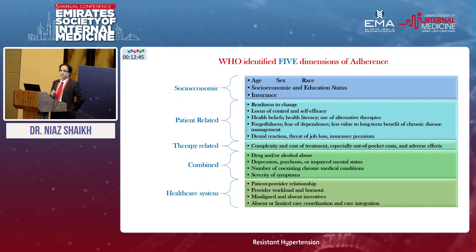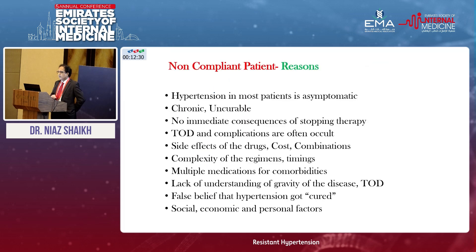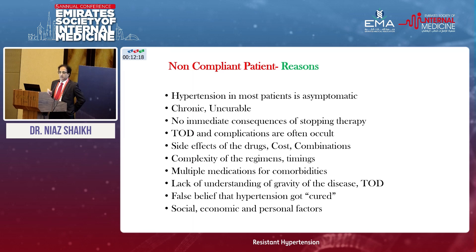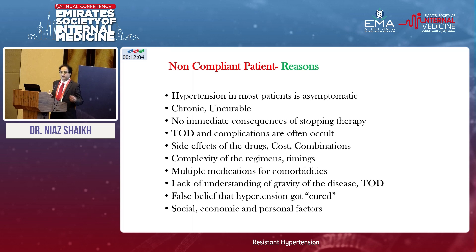Coming back to the patient perspective — why do patients have a problem with adherence? Patients think blood pressure is a silent, asymptomatic, and incurable chronic disease. Even if the patient misses a few doses, there is no symptom, so patients are tilted toward poor compliance. Target organ damage is not necessarily symptomatic either. Side effects, cost, complexity of the regimen, and multiple medications are all important contributing factors.